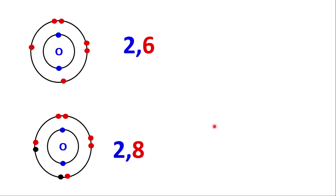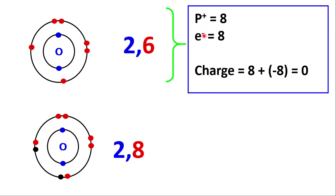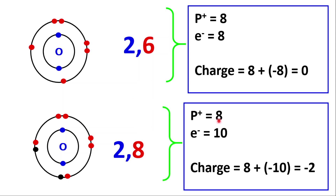Let us calculate this mathematically. Oxygen in its elementary state has 8 protons and 8 electrons. 8 positive plus 8 negative equals 0 — there is no charge on the natural atom. When it gains 2 electrons, the number of protons remains 8 while the number of electrons becomes 10. So, 8 positive plus 10 negative gives negative 2. Therefore, to write the ion of oxygen, it will be O 2 minus.